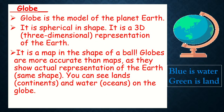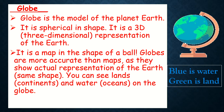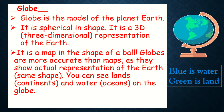A globe is the model of the planet Earth. It is spherical in shape and it is a 3D representation of the Earth — a map in the shape of a ball. Globes are more accurate than maps as they show the actual representation of the Earth. You can see lands and water on the globe — blue is water, green is land.